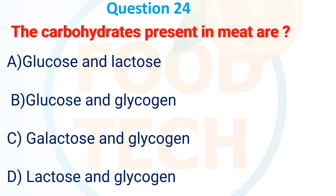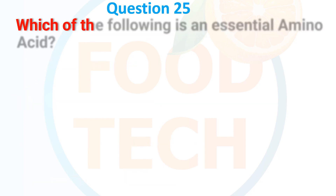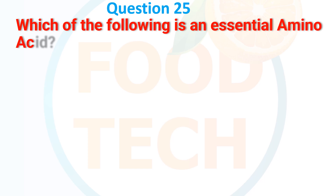Question 24: The carbohydrates present in meat are — A. Glucose and lactose, B. Glucose and glycogen, C. Galactose and glycogen, D. Lactose and glycogen. The answer is B. Glucose and glycogen.